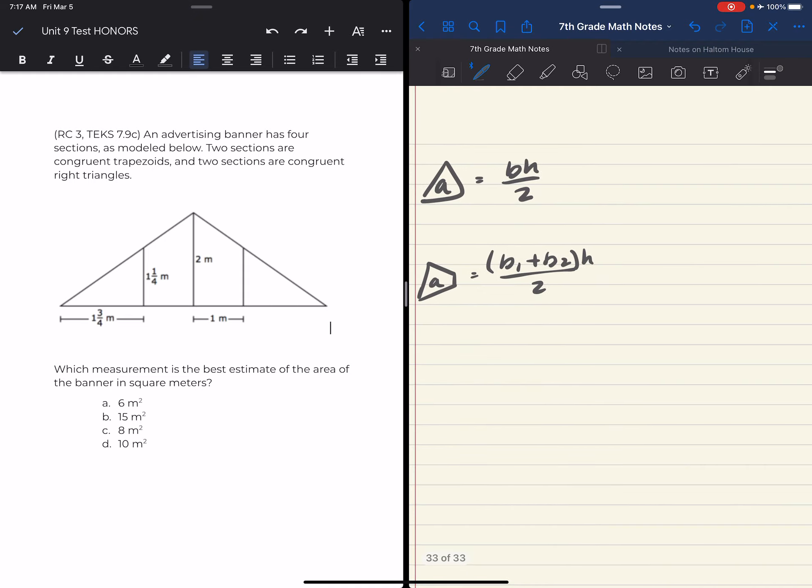So my right triangle, it looks like it's 1.75, right? One and three-fourths. So 1.75. And my height looks like one and a quarter, so 1.25.